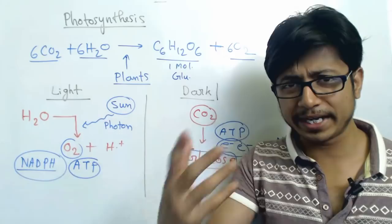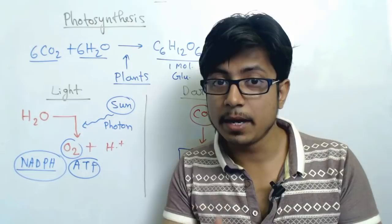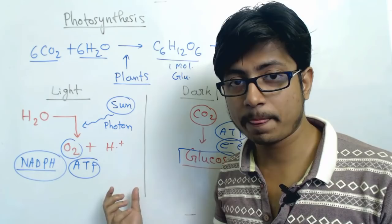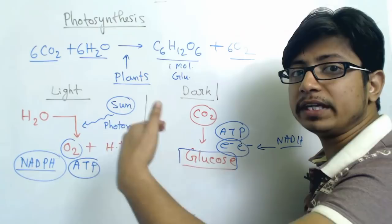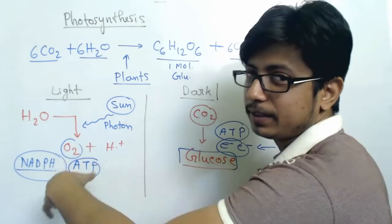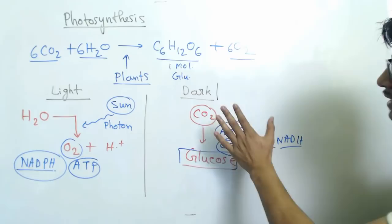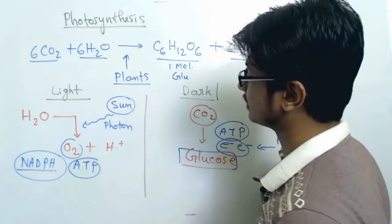This electron transport chain works in a reverse way compared to aerobic respiration. In aerobic respiration, the process begins from NADH or FADH2 and electrons are transferred until the terminal electron acceptor oxygen binds with hydrogen and converts it into water — oxygen is the electron acceptor. But in photosynthesis, water acts as the electron donor and initiates the electron transport chain. The electrons are ultimately received by NADPH, which carries them to the dark reaction, and when water removes the electron, it splits into oxygen and hydrogen.